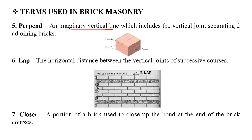The vertical joint is an imaginary vertical line forming a vertical joint between bricks. The next term is the lap — the horizontal distance between the vertical joints of successive courses.